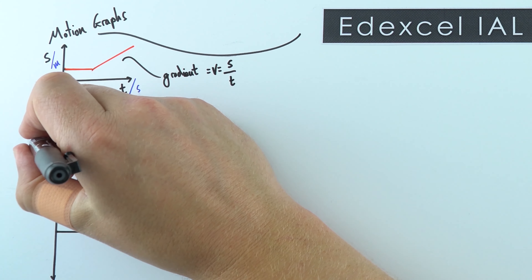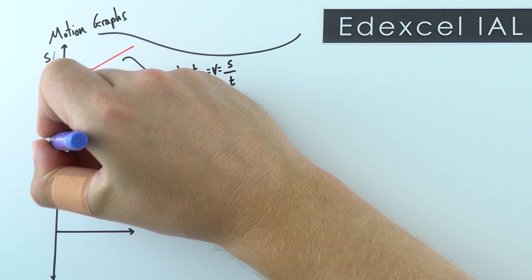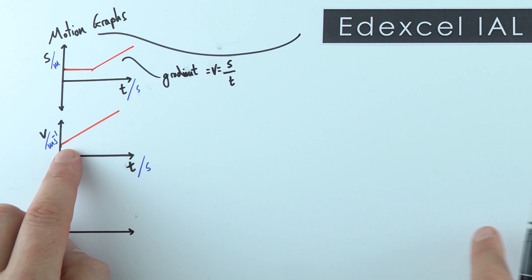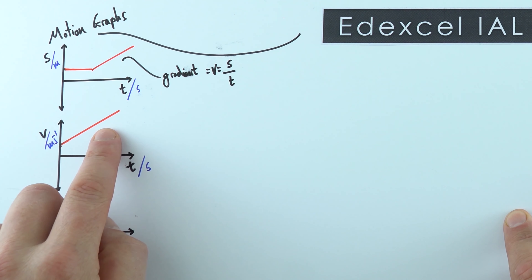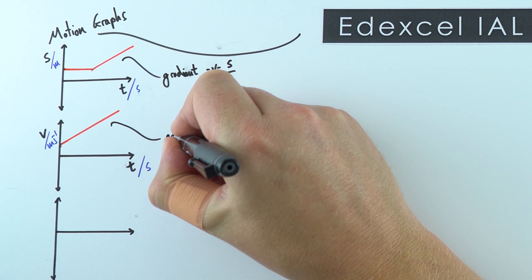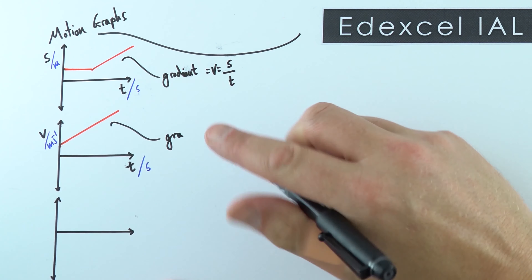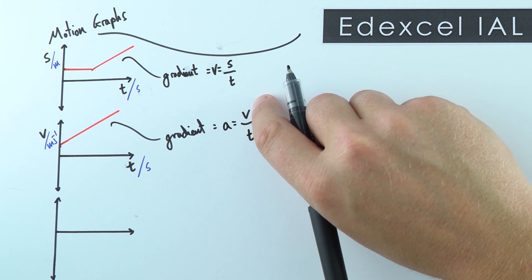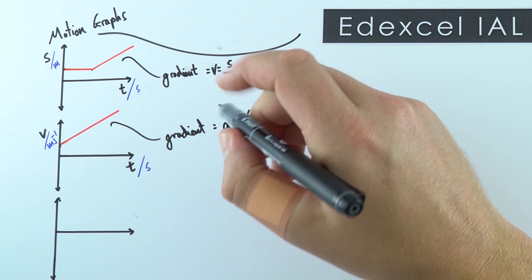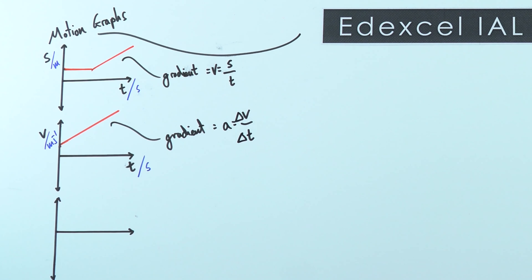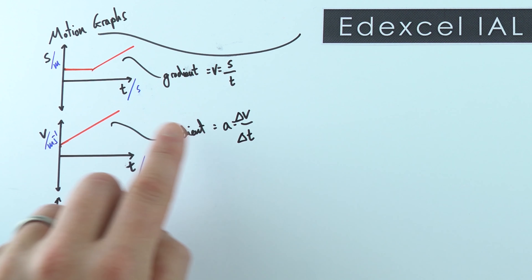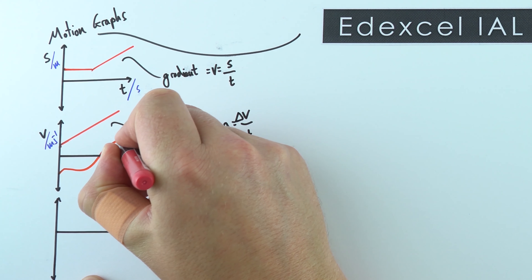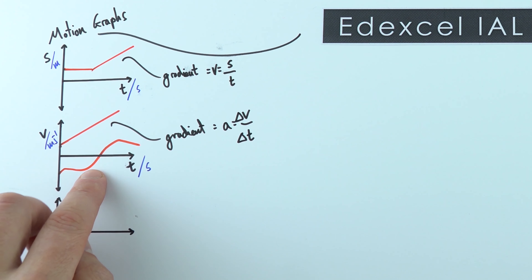We can also look at velocity-time graphs, with velocity measured in meters per second and time in seconds. If we have a graph with a constant gradient, that gradient now represents the change in velocity with respect to time — which is what we call the acceleration. So acceleration equals the gradient, which is the change in velocity over the change in time. A constant gradient means constant acceleration, but sometimes we get a curve, meaning the acceleration is changing at different times.